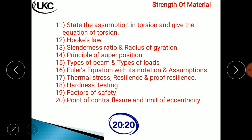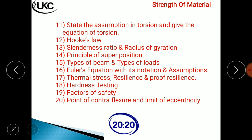Question 11: state the assumptions in torsion and give the equation of torsion. This is from the shaft chapter. The assumptions are similar to those in bending — the material is homogeneous, and the cross-sectional area remains the same before and after torsion.